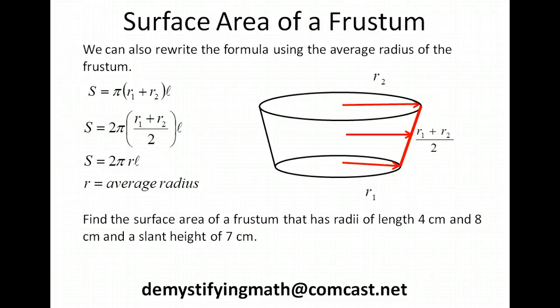So let's put this to use. Suppose that we had a frustum that had radii of length 4 cm and 8 cm. That would mean that their average radius length would be 6, and a slant height of 7 cm. So plugging into our formula for the surface area of the frustum, we have 2π times our average radius which is 6 times 7, which gives us 84π cm squared.